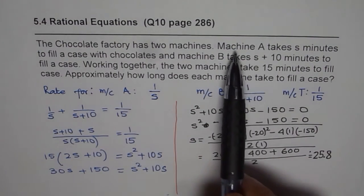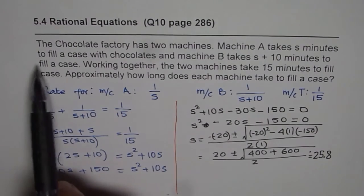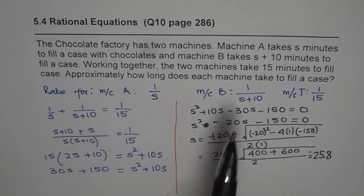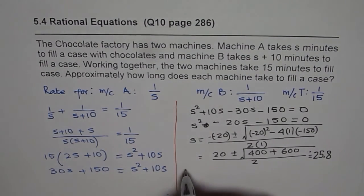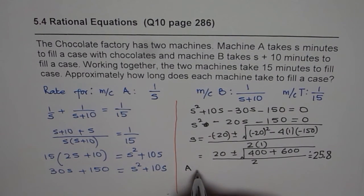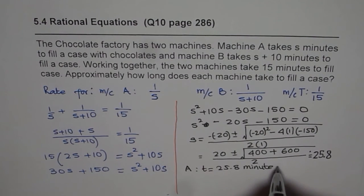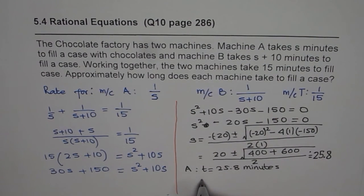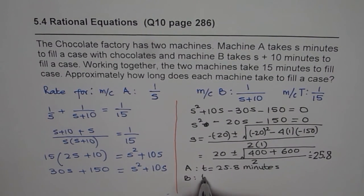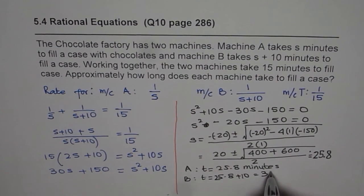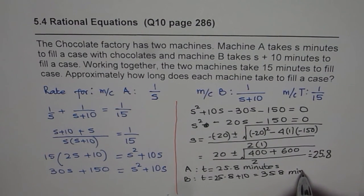Now s is what? S is machine A takes s minutes to fill a case. That is s. And B takes s plus 10. So for A, what is the time it takes? Time taken is 25.8 minutes. And for B, time taken will be 10 more. So it is 25.8 plus 10, that is 35.8 minutes.